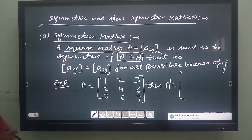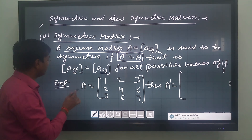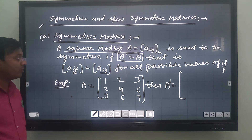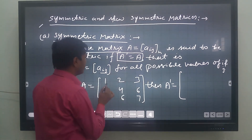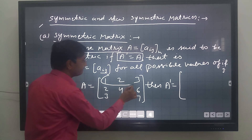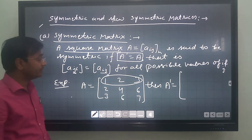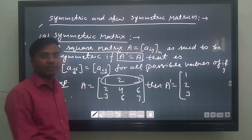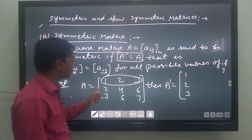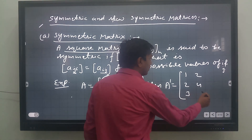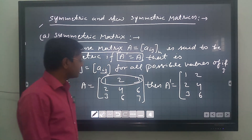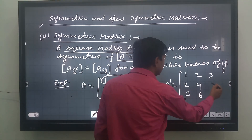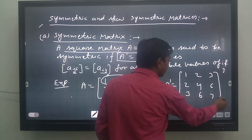Let us verify with an example. Consider matrix A = [[1,2,3],[2,4,6],[3,6,7]]. Finding A transpose: the first row 1, 2, 3 becomes the first column; the second row 2, 4, 6 becomes the second column; and the third row 3, 6, 7 becomes the third column. So A^T = [[1,2,3],[2,4,6],[3,6,7]].